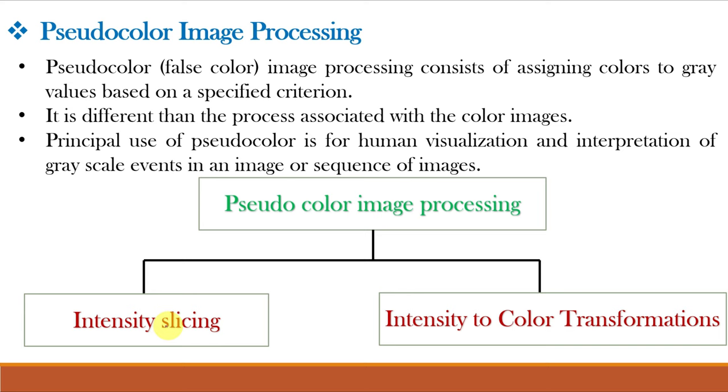For intensity slicing, we slice different intensity levels and assign different colors to each level. While for intensity to color transformation or gray level to color transformation, the approach is to perform three independent transformations on the gray level of any input pixel.